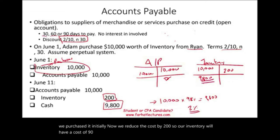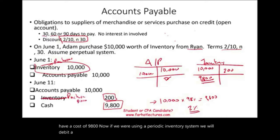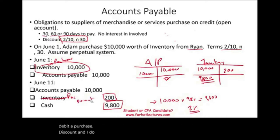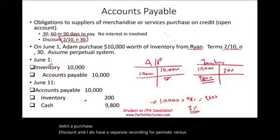Under a periodic inventory system, we would debit a purchase discount account instead of reducing inventory. I do have a separate recording for periodic versus perpetual. Accounts payable is one of the current liabilities you need to be familiar with — all companies will have some sort of accounts payable because buying on account is a normal part of business.